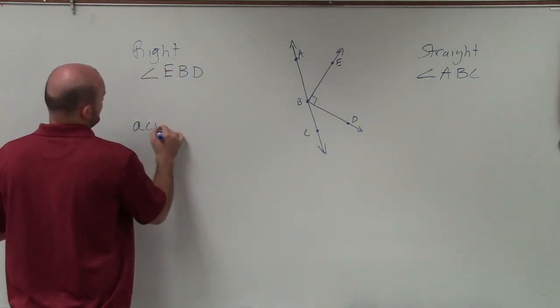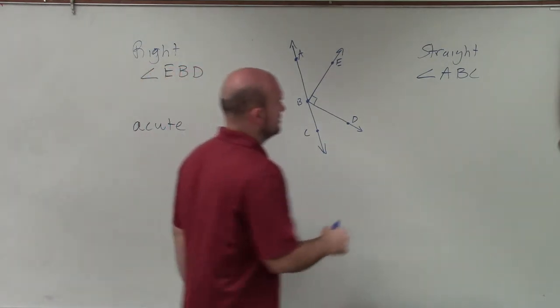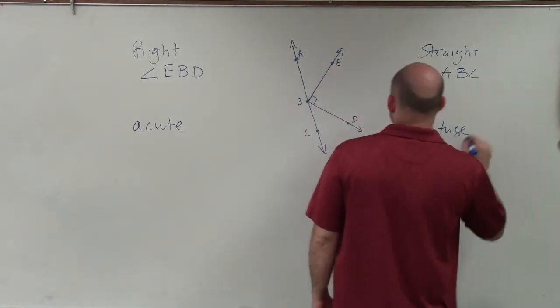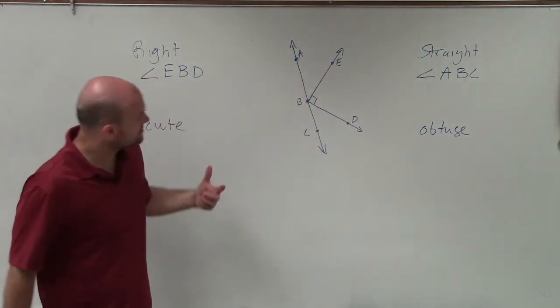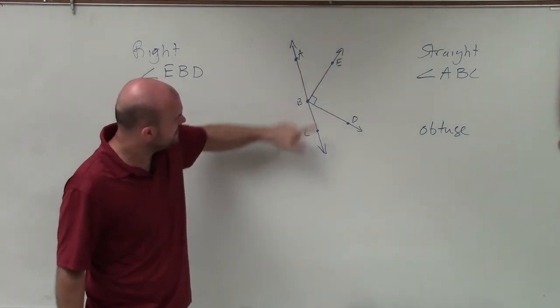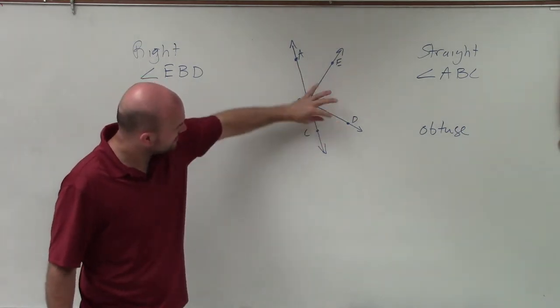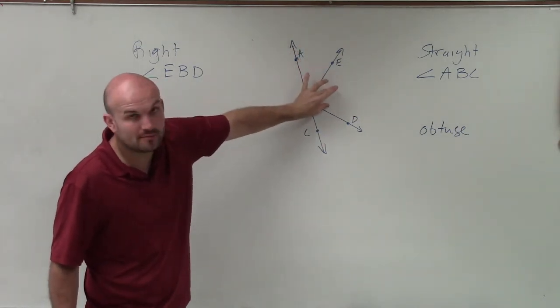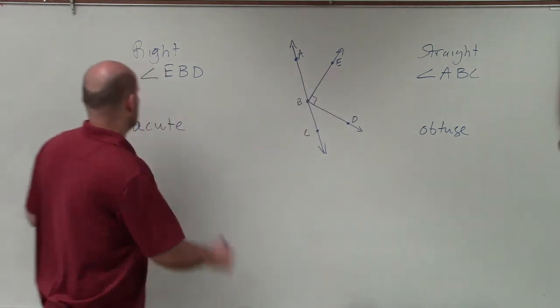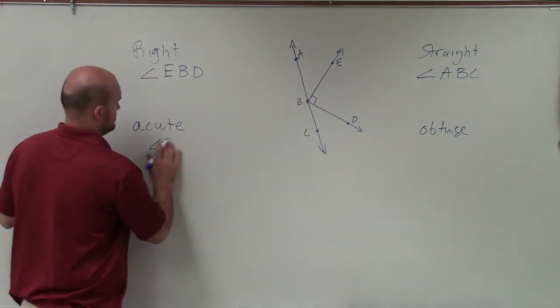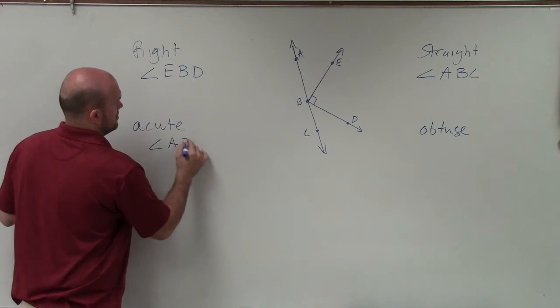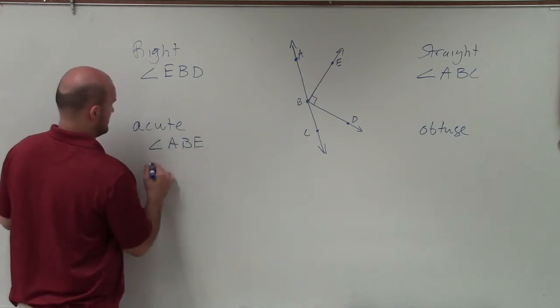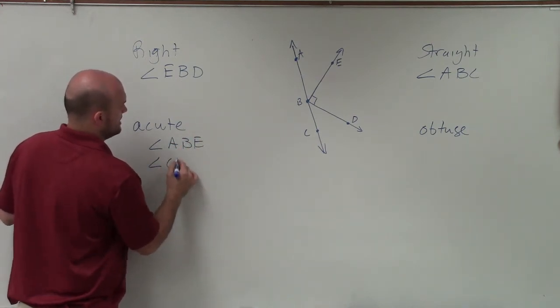So let's go and write these here. Acute and obtuse. There's two acute angles that I see here. I can have ABE or CBD. These two angles are definitely smaller in measure than my 90 degree angle. So I can say angle ABE and angle CBD.